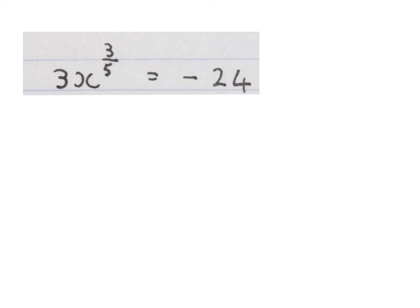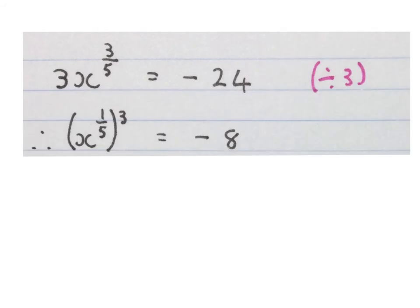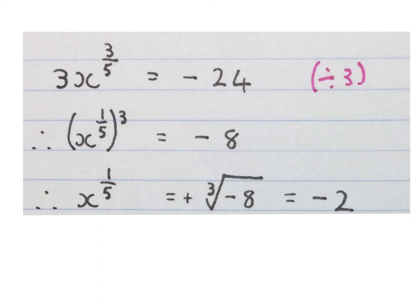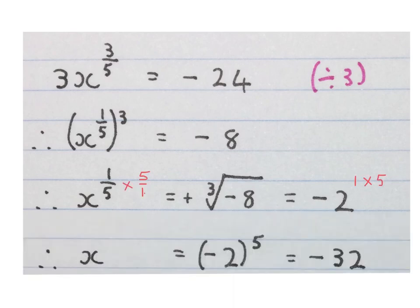Let's do the next equation, solve for x. First we divide by 3 on both sides and break up our exponent. Minus 24 divided by 3 is minus 8. To get rid of the cube, we cube root both sides, so we get x to the power of a fifth equals minus 2. We multiply both exponents by 5, so we get x equals minus 2 to the power of 5, and that is minus 32.